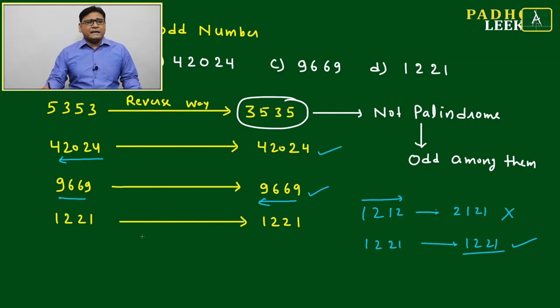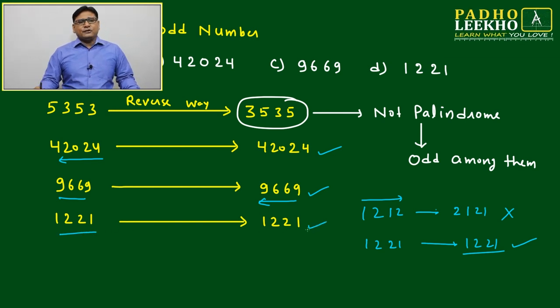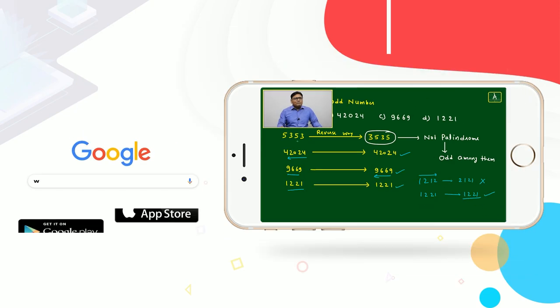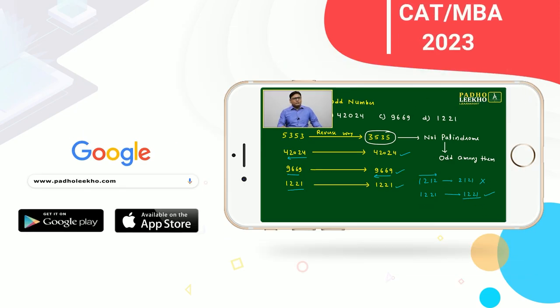1221, again palindrome. This means only 5353 is not a palindrome. It is not following the relationship followed by the other numbers.